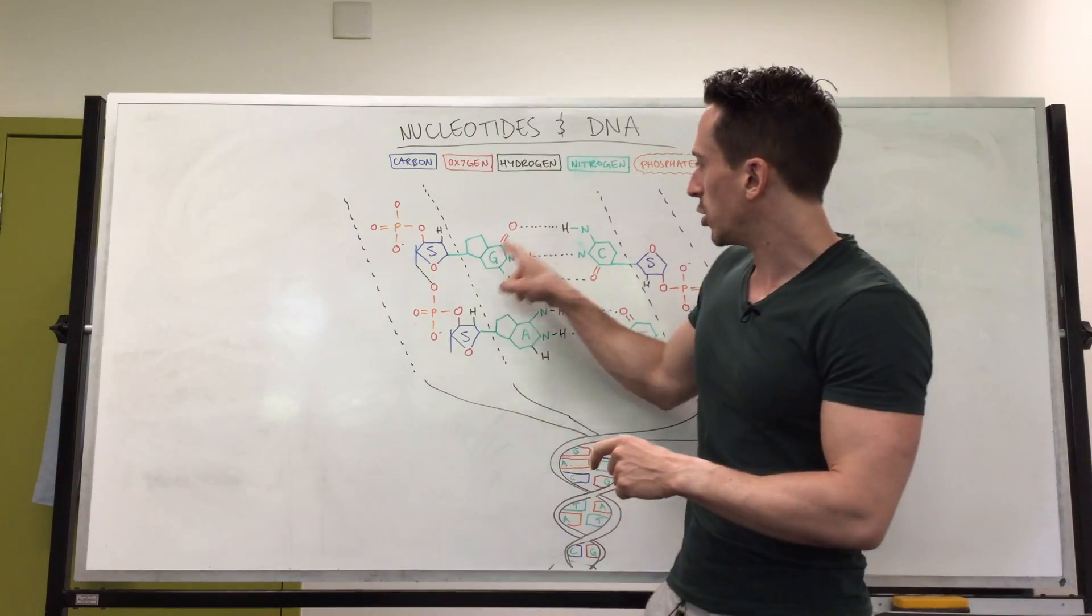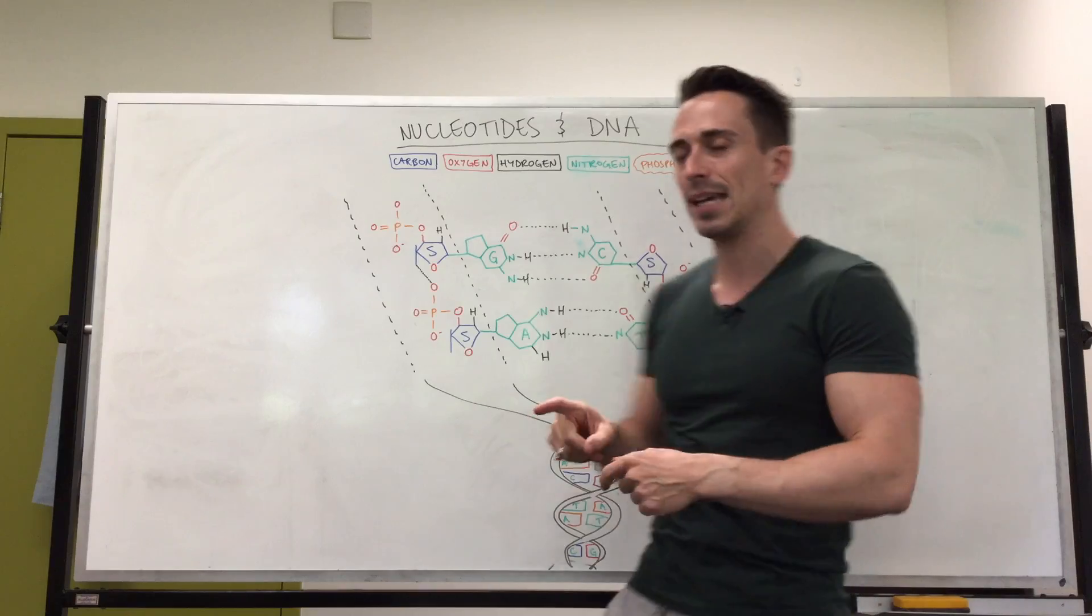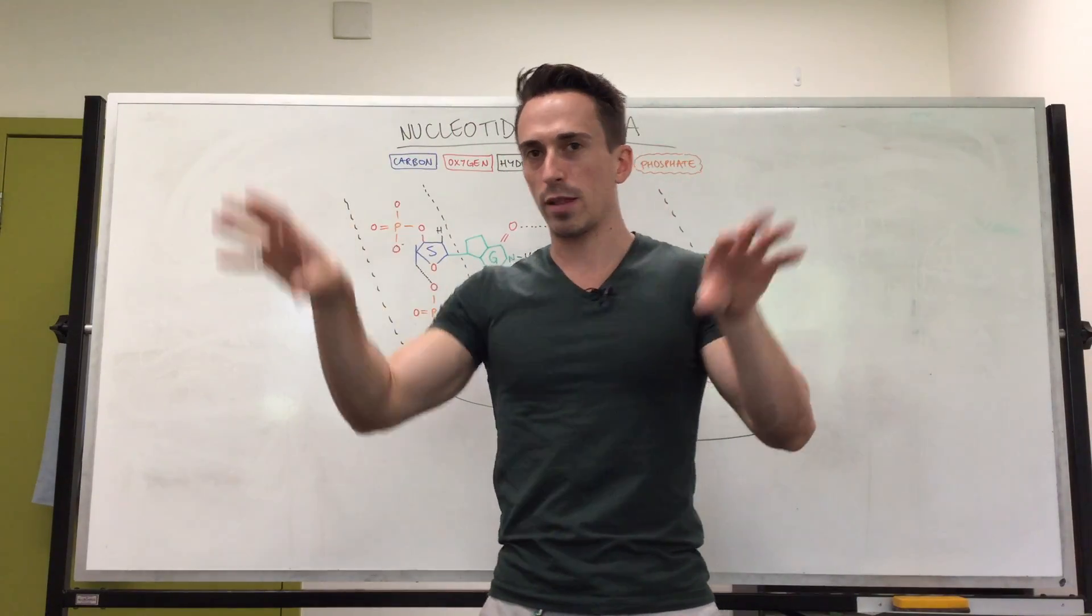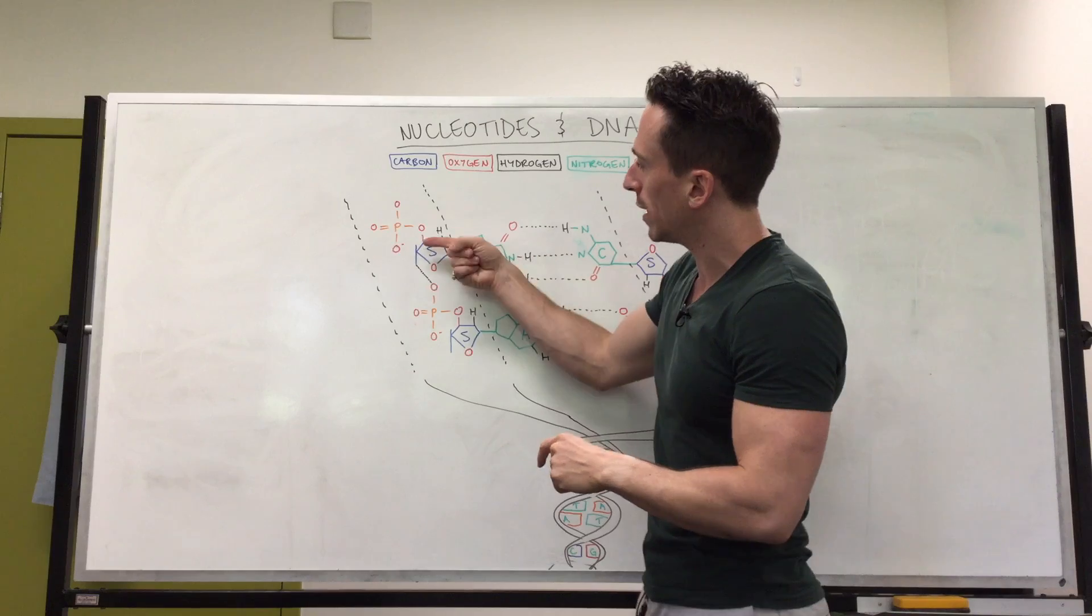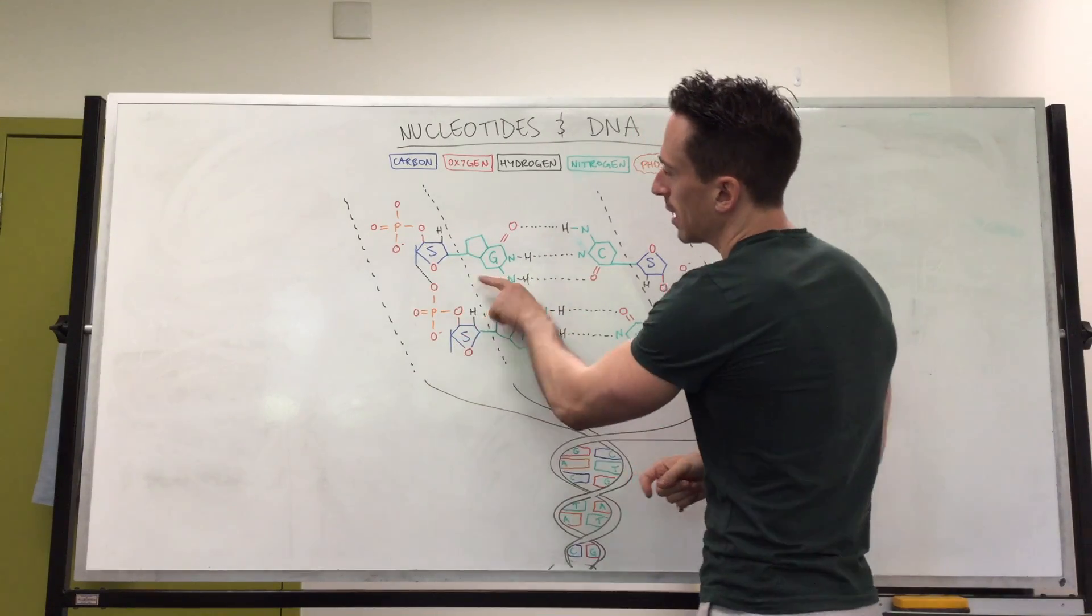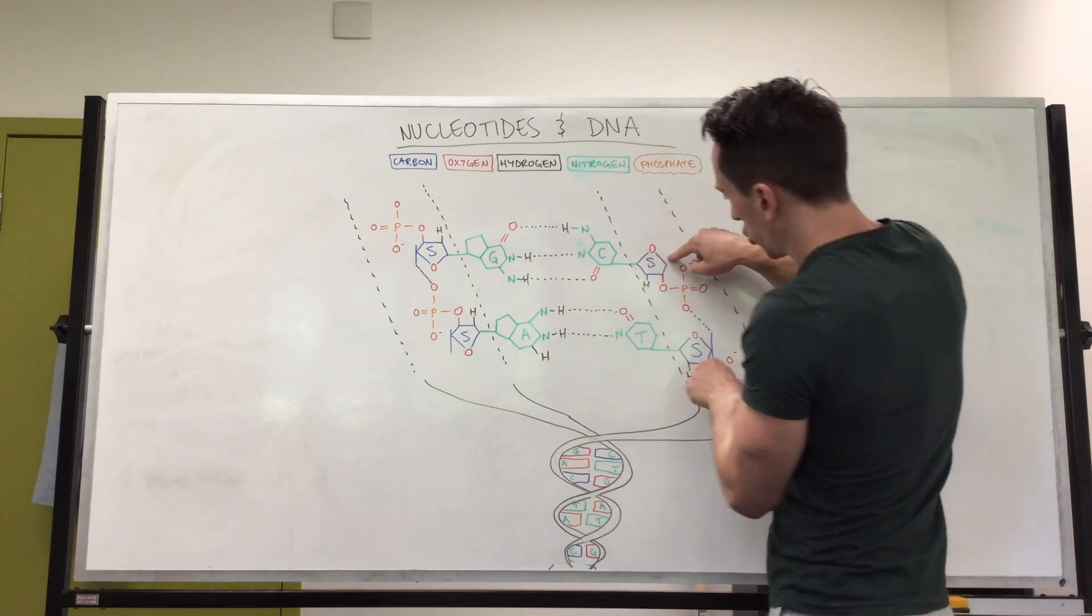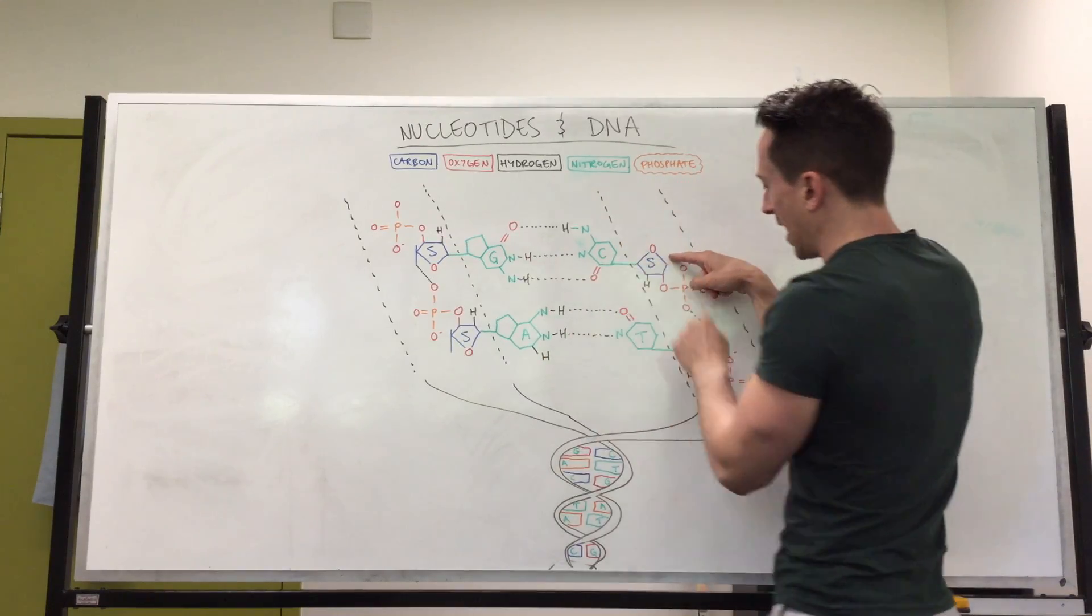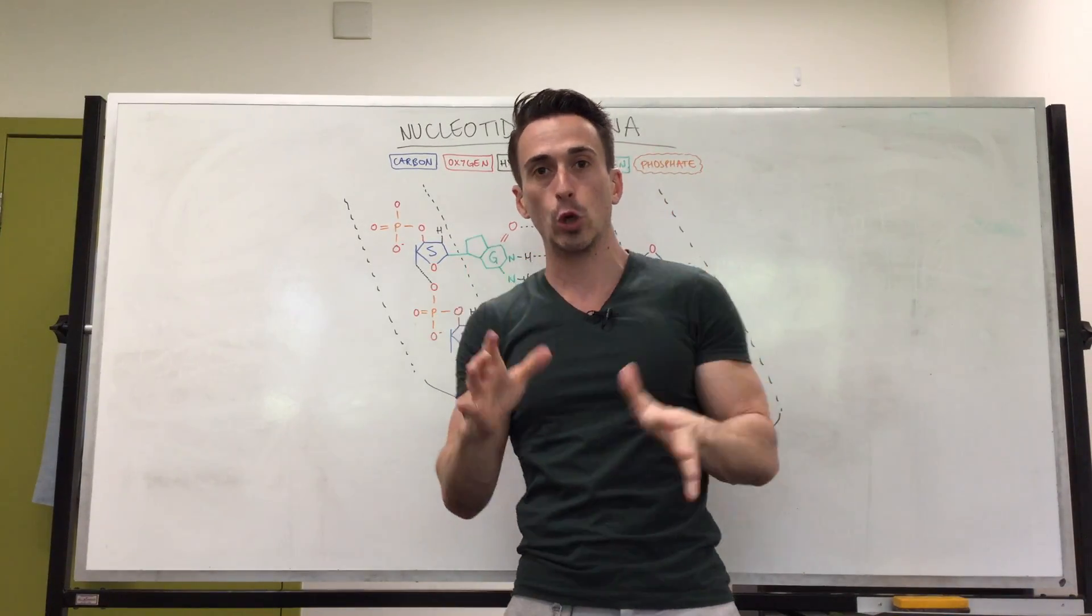So these nucleotides, a G, an A, a C and a T, in order to make DNA they need to be bound to a couple of other things. First thing they need to be bound to is a sugar molecule. So you can see each of them are bound to a sugar molecule that I've denoted here with an S. This sugar molecule is very similar to that of glucose.